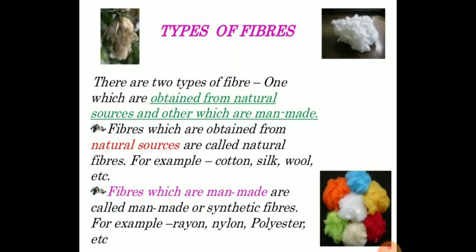There are two types of fiber — one which are obtained from natural sources and others which are man-made. Fibers obtained from natural sources are called natural fibers, for example cotton, silk, wool, etc. Fibers which are man-made are called man-made fibers or synthetic fibers, for example rayon, nylon, polyester, etc.